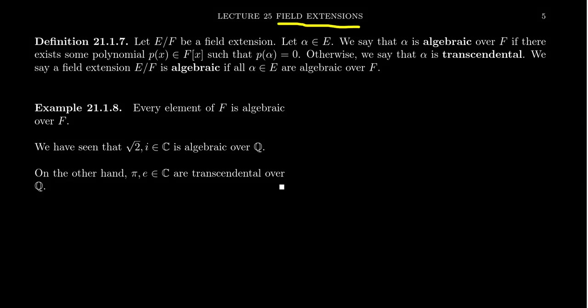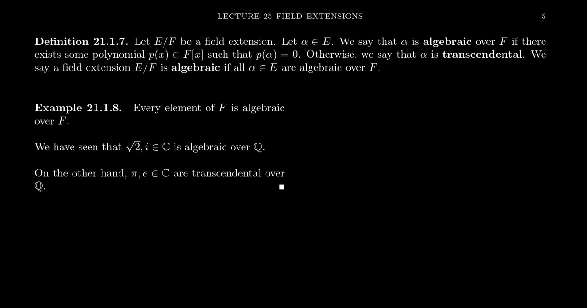As the name of this slide suggests, in lecture 25 we've introduced the notion of a field extension. It turns out that not all field extensions are created equal — there is a dichotomy we are very much interested in. Suppose we have the field extension E over F and let alpha be an element in the extension field E. We say that alpha is algebraic over F if there exists some polynomial p(x) inside the polynomial ring F[x] such that alpha is a root of p, i.e., p(alpha) = 0.